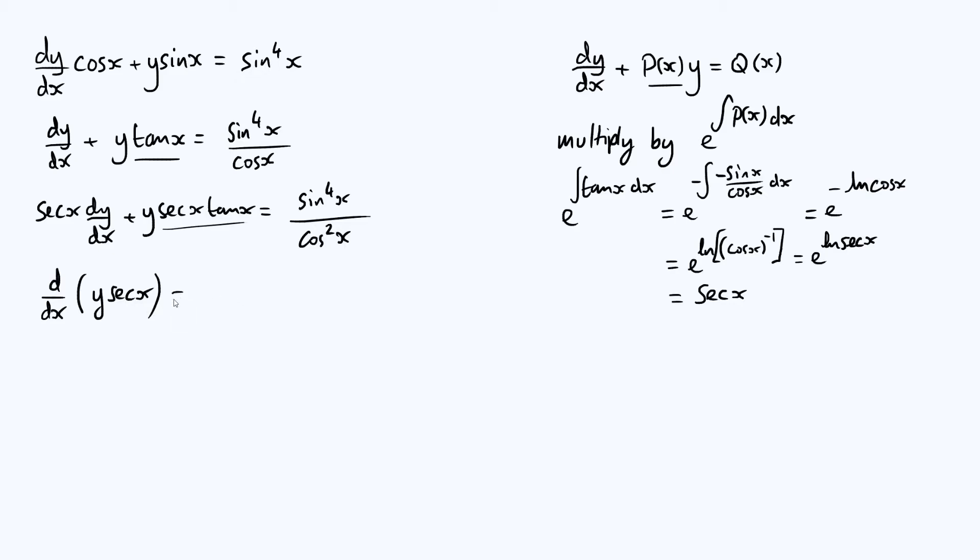With this right-hand side, we are ultimately going to want to integrate it because we've got a d/dx on the left-hand side and we want to undo that d/dx. I'm going to take the first step towards that now and notice that sin to the 4x is the same as sin squared x all squared, but sin squared x can be written as 1 minus cos squared x. And so the numerator of that fraction is 1 minus cos squared x all squared divided by cos squared x.